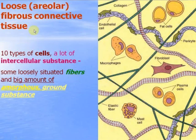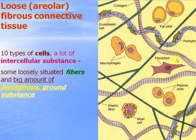Loose areolar fibrose connective tissue. It contains up to ten types of cells and a large amount of intercellular substance, which consists of some loosely situated fibers — collagen, elastic, and also reticular — and a large amount of amorphous ground substance, shown in yellow in this picture.